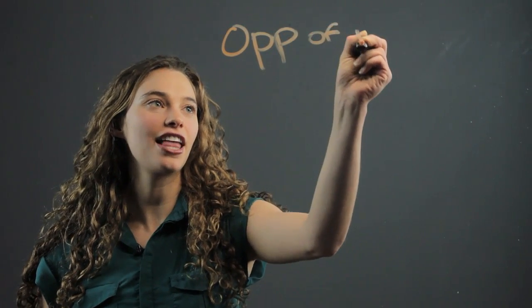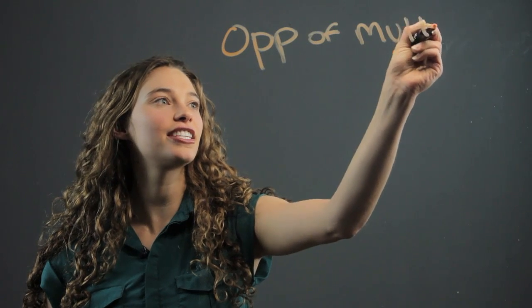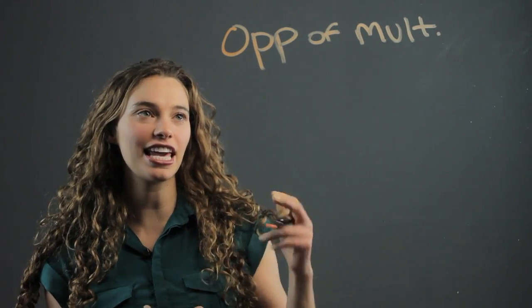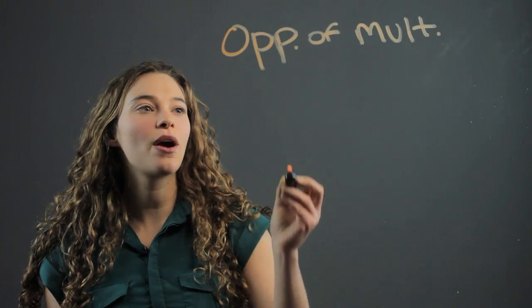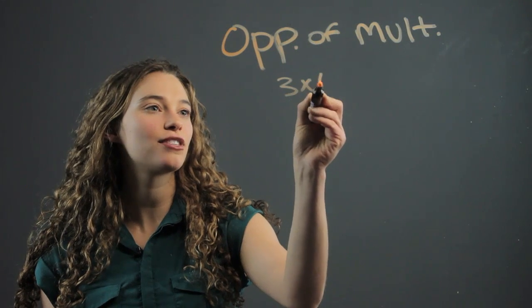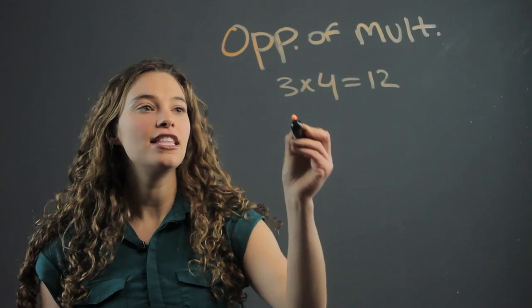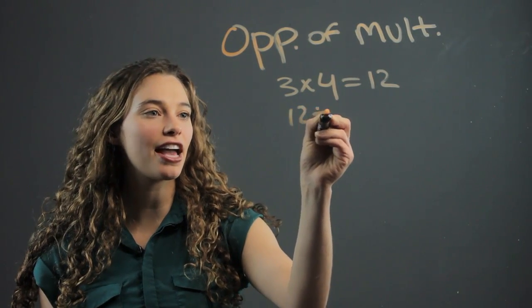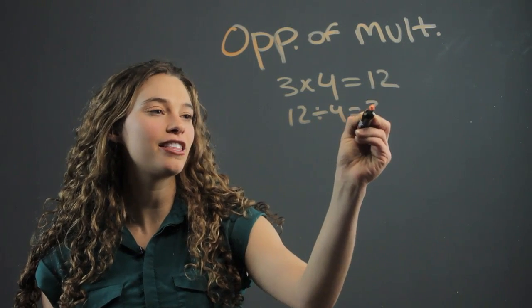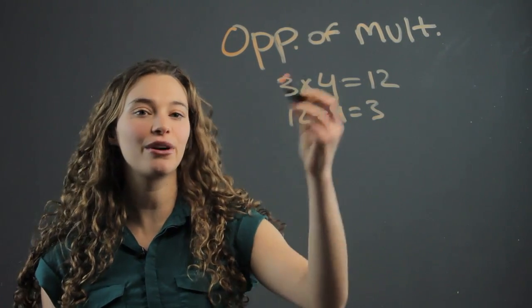One thing you can teach them is that division is the opposite of multiplication. I like to tell all my third graders this ahead of time just so that they get that in their heads. So if three times four is going to be twelve, then twelve divided by four is going to be three, or twelve divided by three is going to be four.